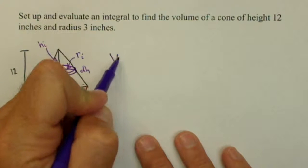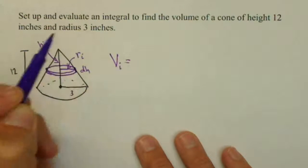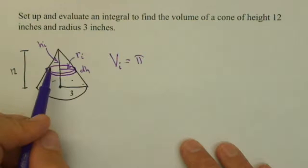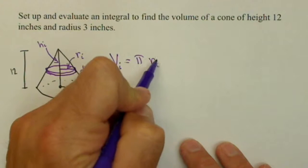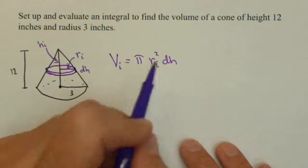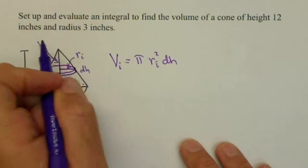Now first off, we want the volume of this thing. So the volume of the i-th slice, the slice is just a cylinder and it's pi R sub i squared dH. Now, we have kind of a mix of variables here so we'd like a relationship between R sub i and H sub i.